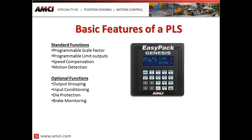Speed compensation adjusts the timing of the limit outputs internally so that as machine speed increases, the position at which those outputs turn on and off remains mechanically the same on the machine. Another standard feature is motion detection, which can be used as a safety feature — it monitors position feedback from the sensor, and if that feedback stops, an output turns on to alert the operator or automatically stop the machine, such as when a sensor cable breaks.